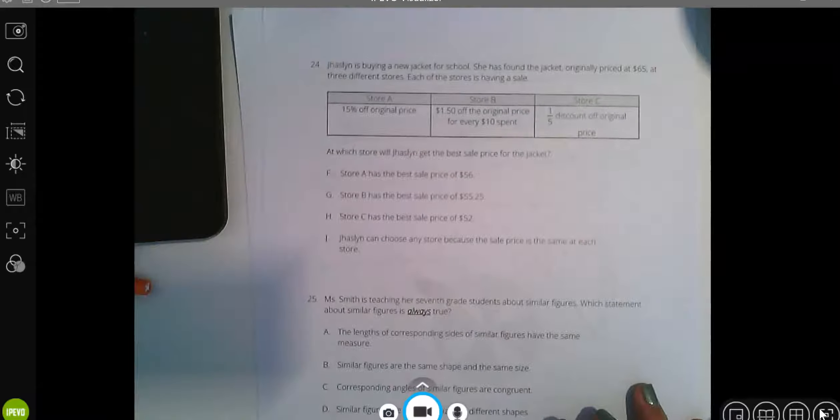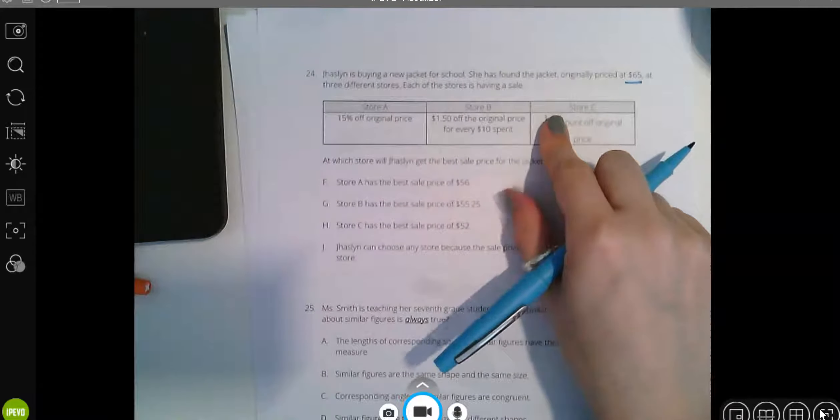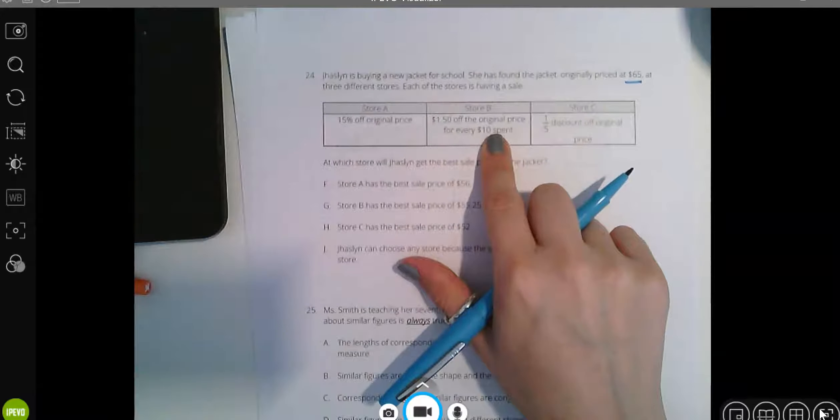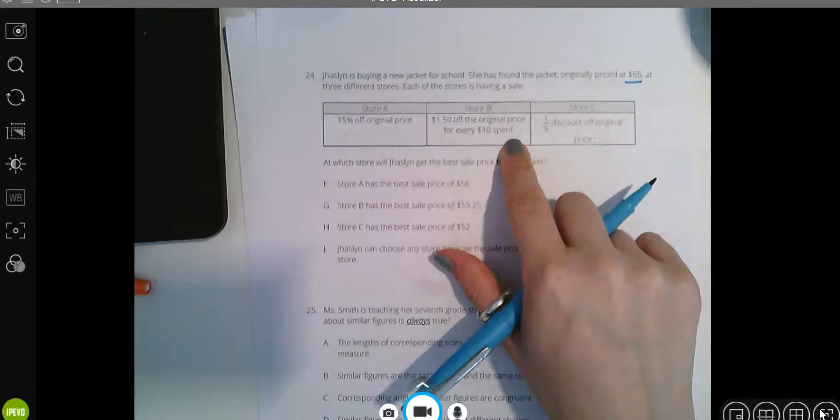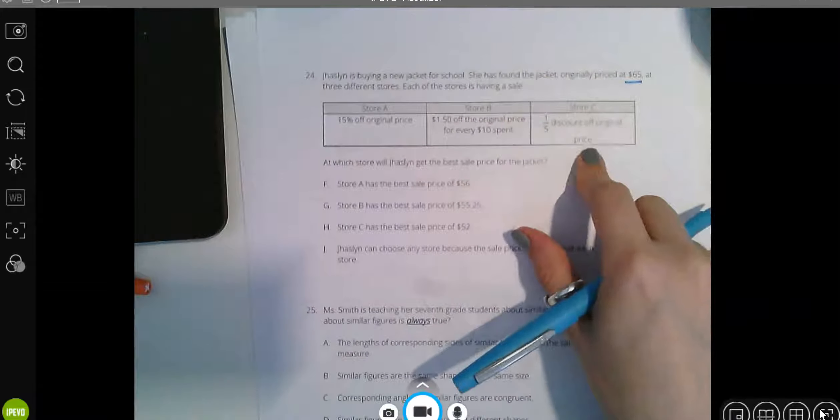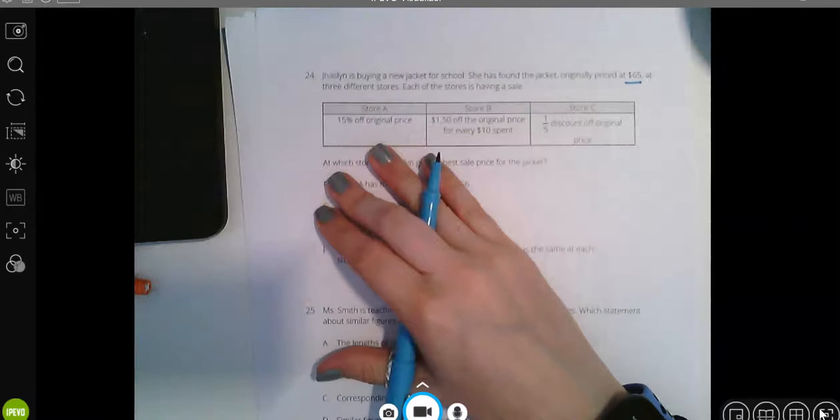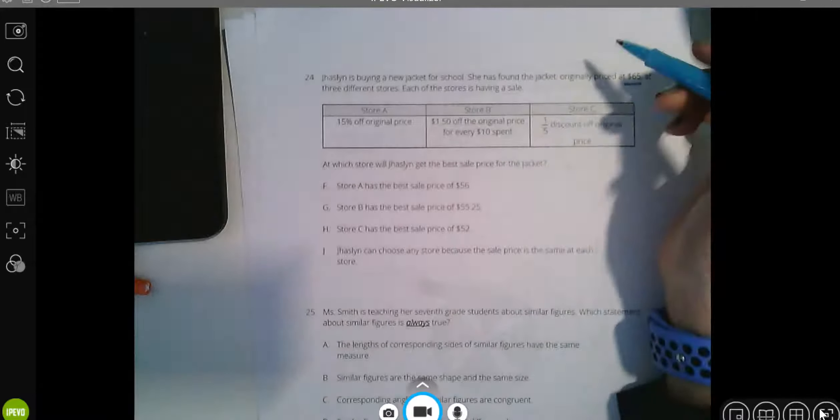Jazlyn is buying a new jacket for school. She has found the jacket originally priced at $65 at three different stores. Each of the stores is having a sale. Store A is 15% off. Store B is $1.50 off the original price for every $10 you spend. And store C is one-fifth off the original price. At which store will she get the best sale price? I'm gonna ignore my answer choices and figure it out myself.